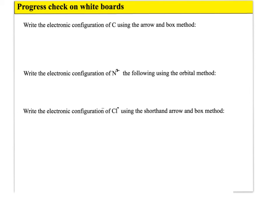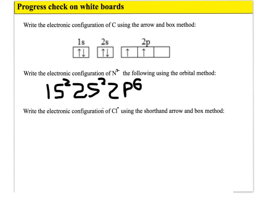For the practice questions: carbon has six electrons, so using the arrow and box method you draw two in the 1S subshell, two in the 2S subshell, and two in the 2P subshell. For nitrogen with a 3-minus charge, the configuration is 1S² 2S² 2P⁶ because it has gained three electrons.